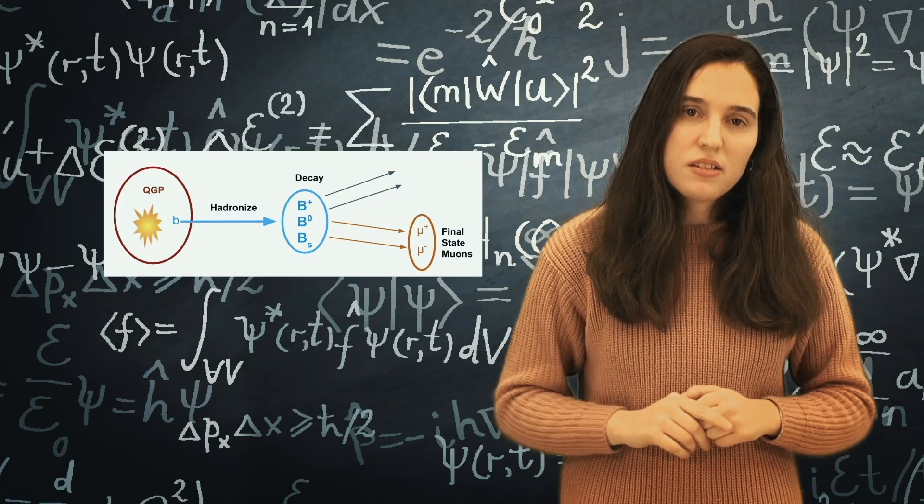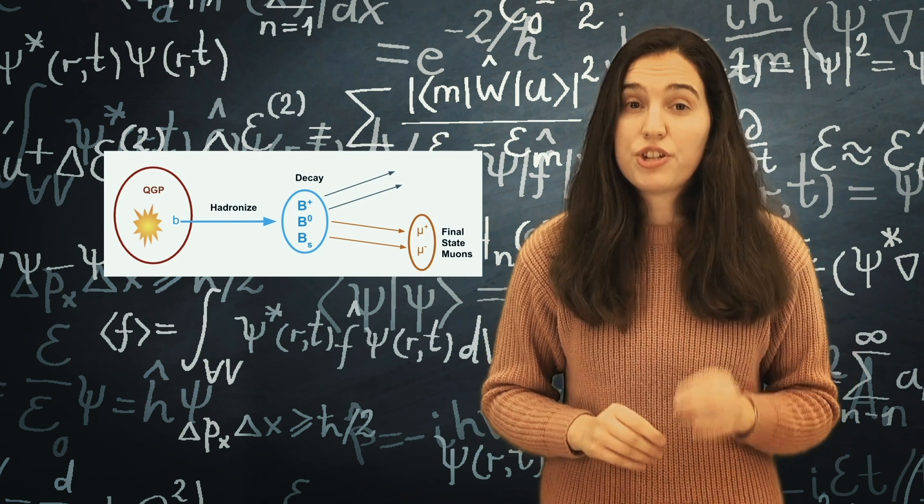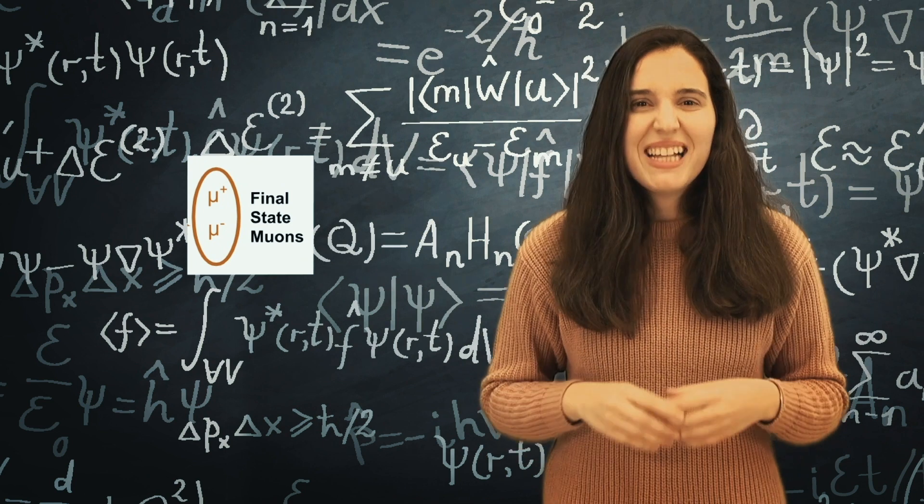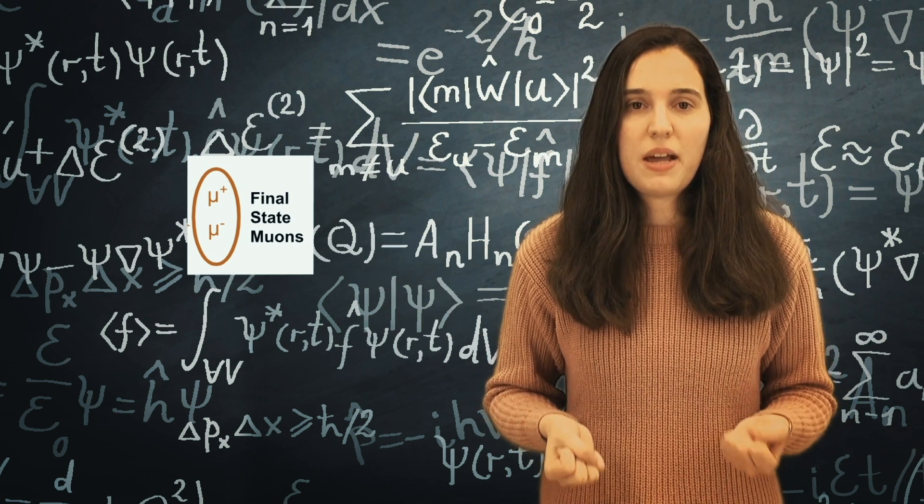From the particles the B mesons decay to, we can identify them. The decay channels used in this analysis contain two opposite charged muons, taking advantage of the great muon identification of CMS.